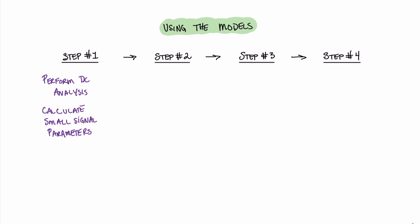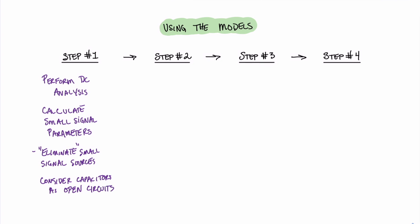One of the things that we're going to find is in real amplifier circuits, we oftentimes have capacitors and we have our small signals. So what do we do with those small signal sources, and what do we do with capacitors? Easy enough for the small signal sources — we just eliminate them. When it comes to the capacitors, we're going to think of them as being open circuits in DC. And that does it for step one.